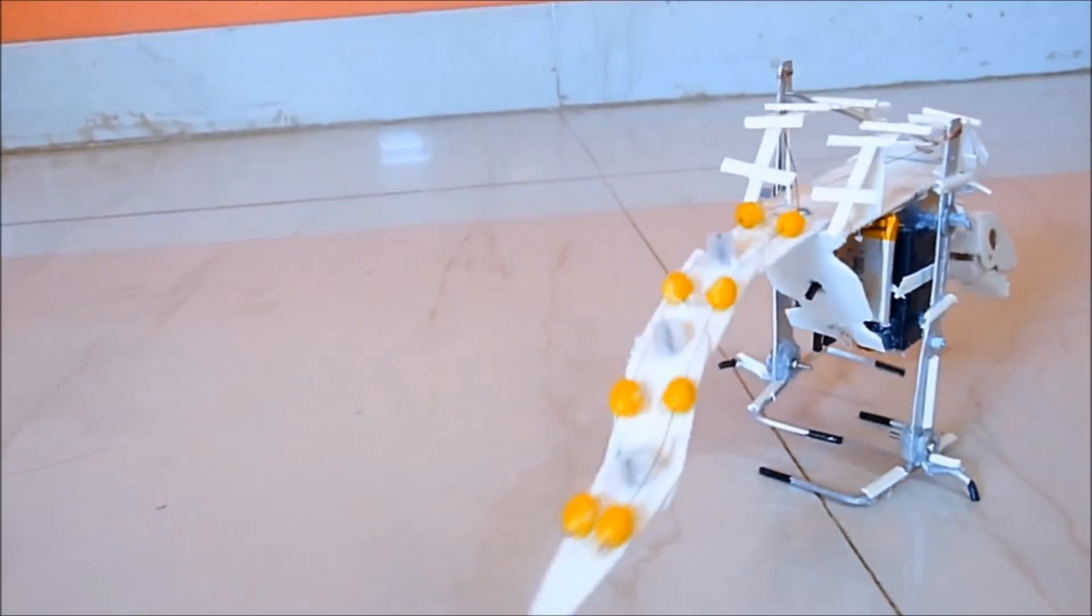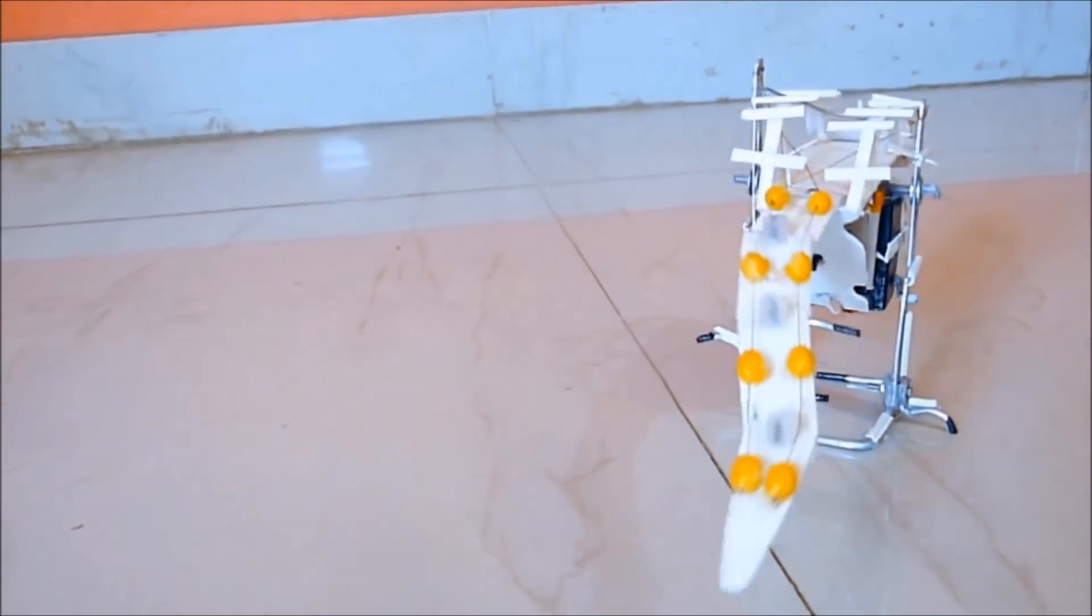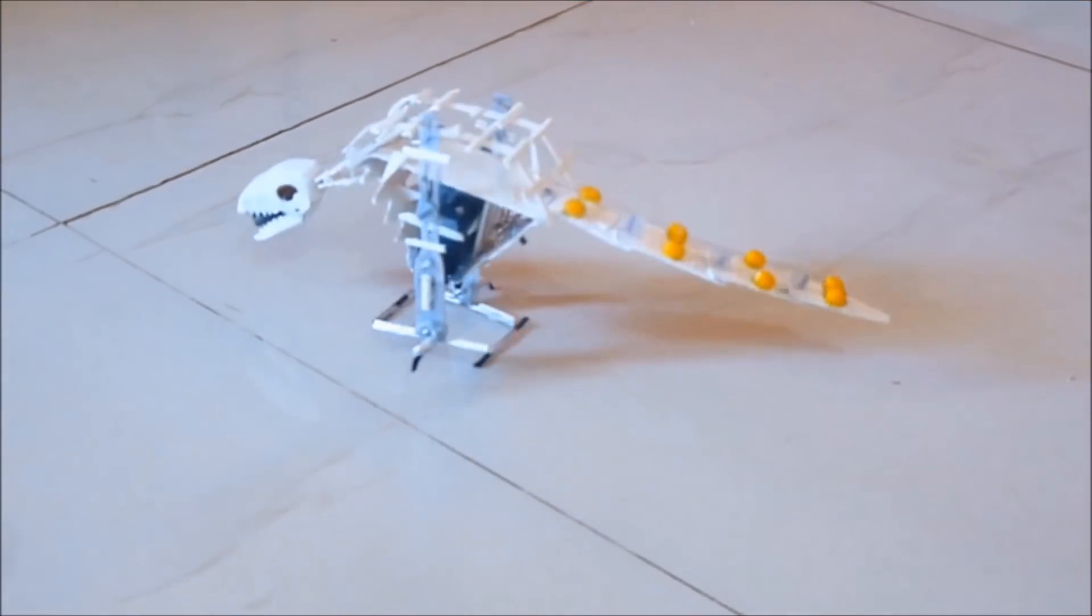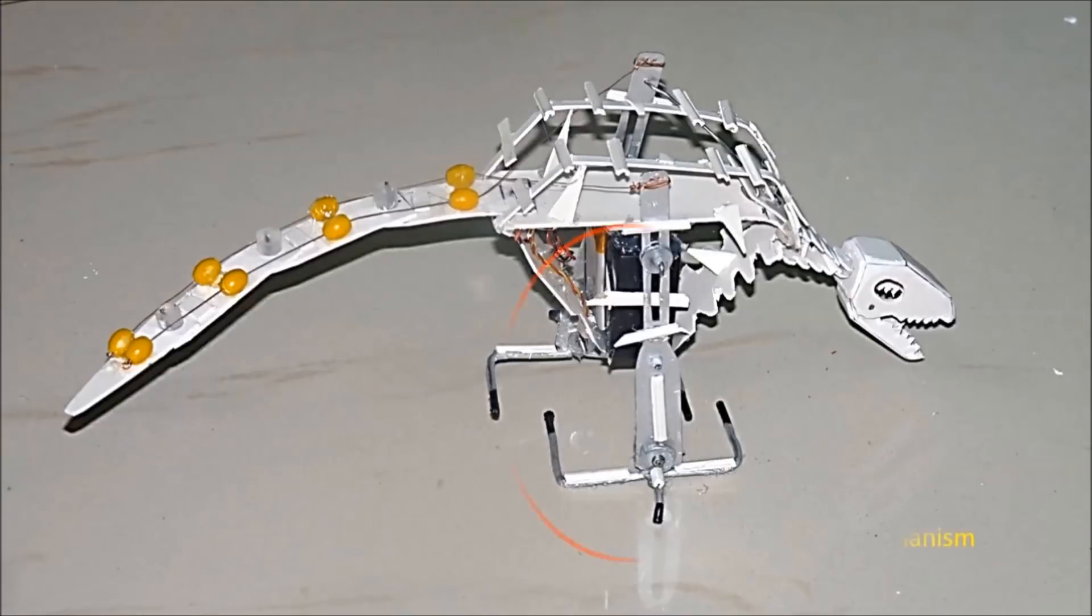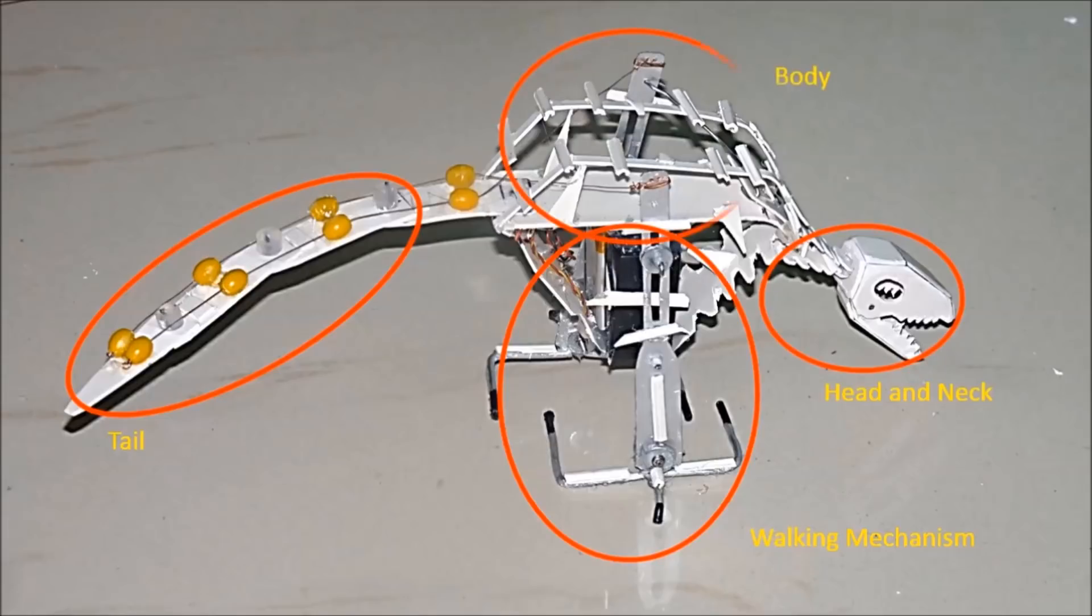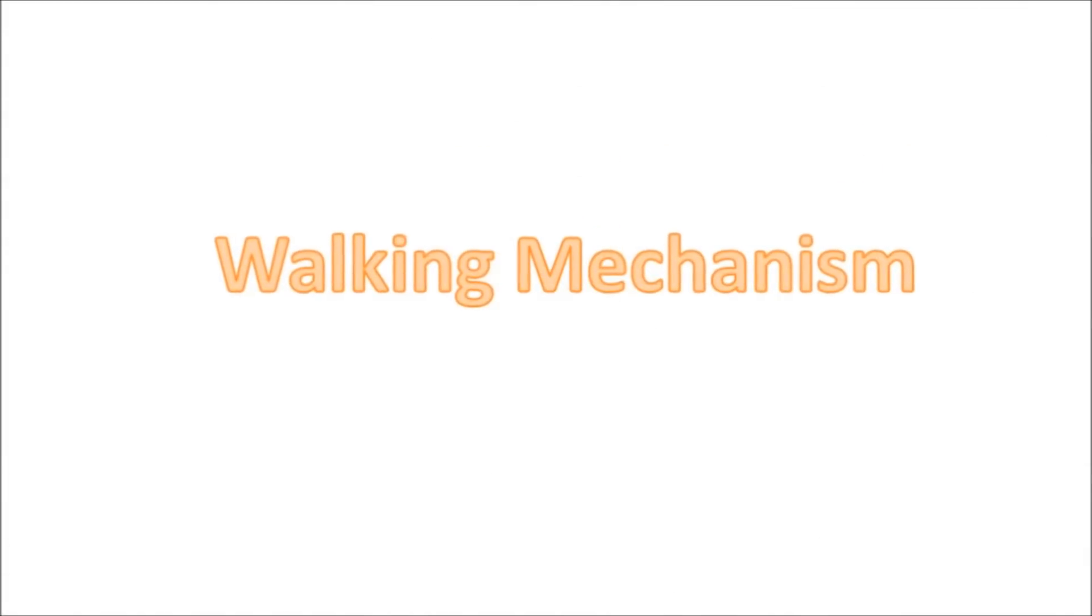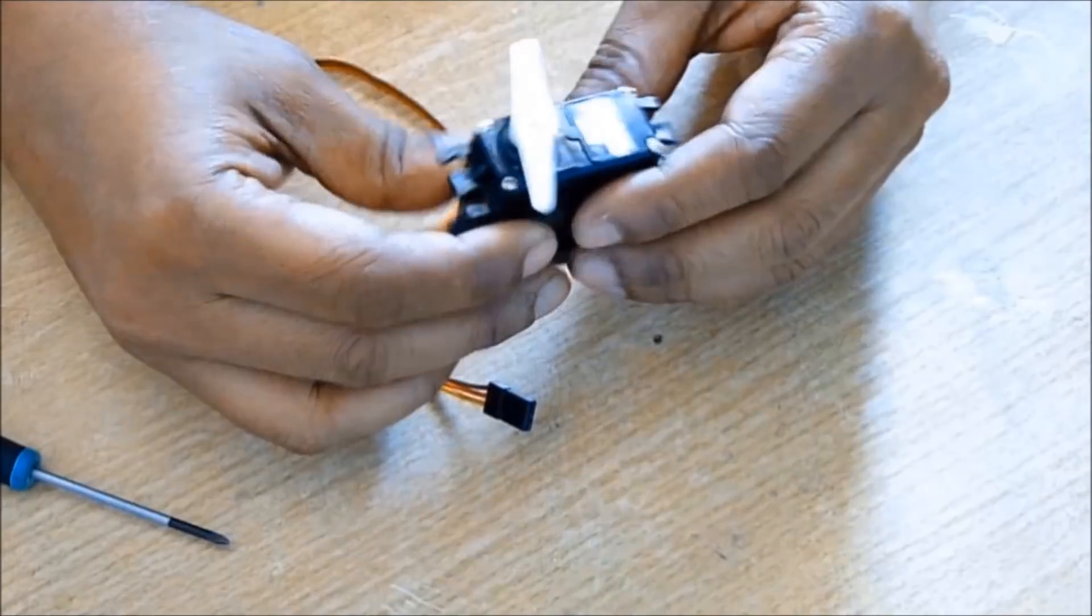Wow, do you like it? But you cannot buy it from a shop, you have to make your own. So let's make it. First we'll make the walking mechanism, then the tail, then the neck and the head, and then the body part.